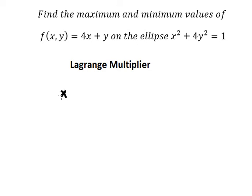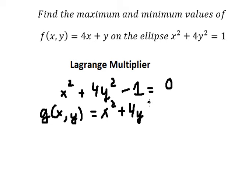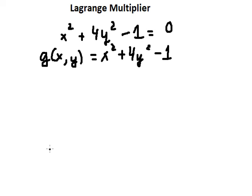We have x squared plus four y squared minus one equals zero. Now we put this as g(x,y), so g(x,y) should be about x squared plus four y squared minus one. Now we can apply the formula.